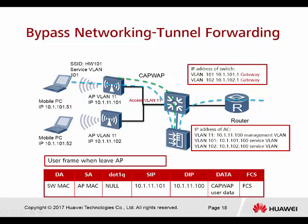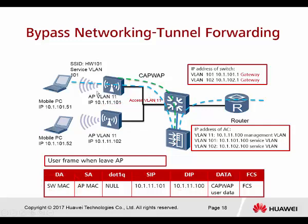In tunnel forwarding, all user data is forced to run inside the CAPWAP tunnel. All user data enters the CAPWAP tunnel, returns to the controller, and the controller forwards it to the gateway. From the packet capture, you see the switch MAC address and AP MAC address, and the source IP is the AP's IP address trying to reach the controller.